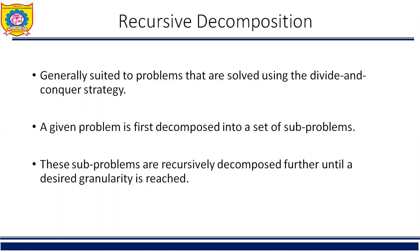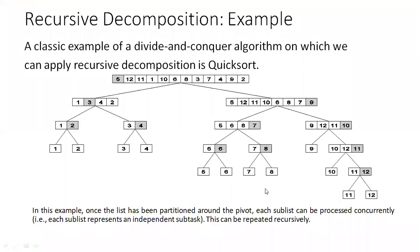A given problem is first decomposed into a set of subproblems. These subproblems are recursively decomposed further until a desired granularity is reached. A classic example of a divide and conquer algorithm on which we can apply recursive decomposition is quicksort, as shown in this figure.